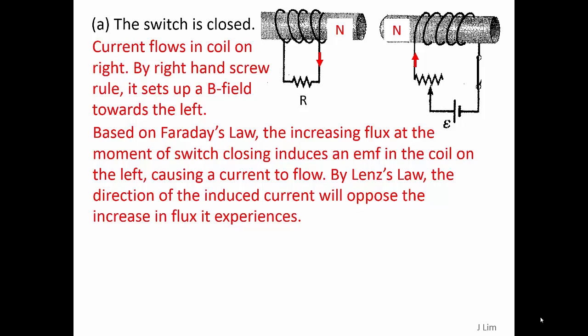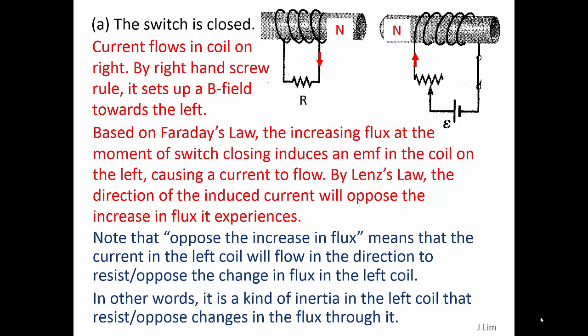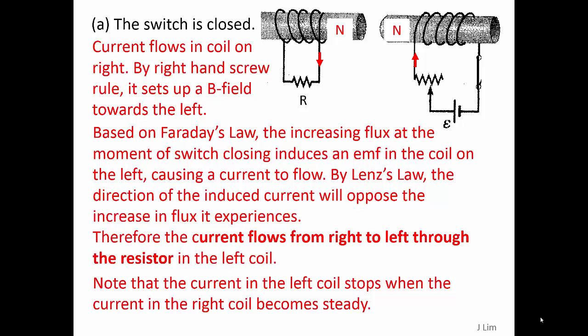By Lenz's law, the direction of the induced current will oppose the increase in flux it experiences. This means that the current in the left coil will flow in the direction to resist or oppose the change in flux — a kind of inertia in the left coil that resists changes in the flux through it. Therefore, the current flows from right to left through the resistor in the left coil.